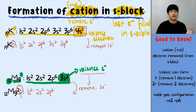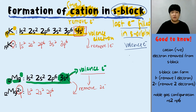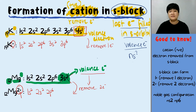For cation formation in the S-block, the element is an S-block element when the last electron filled in is into the S-orbital. The valence electron is the one in the S-orbital. If the S-orbital has S1, you have 1 valence electron; if S2, you have 2 valence electrons.